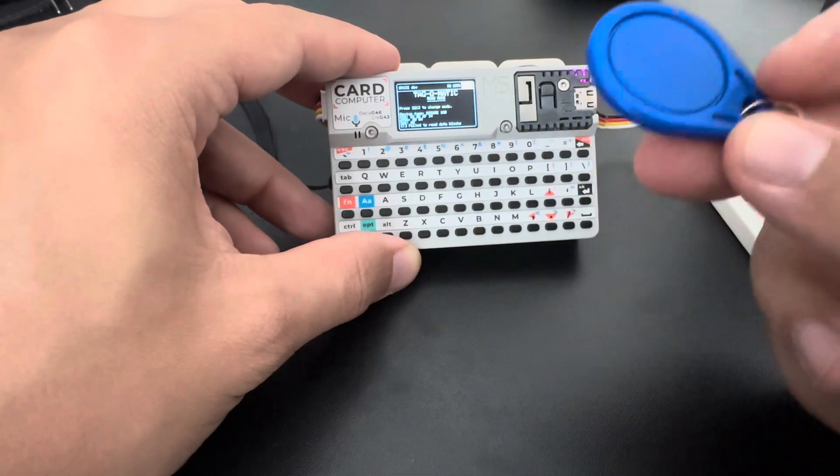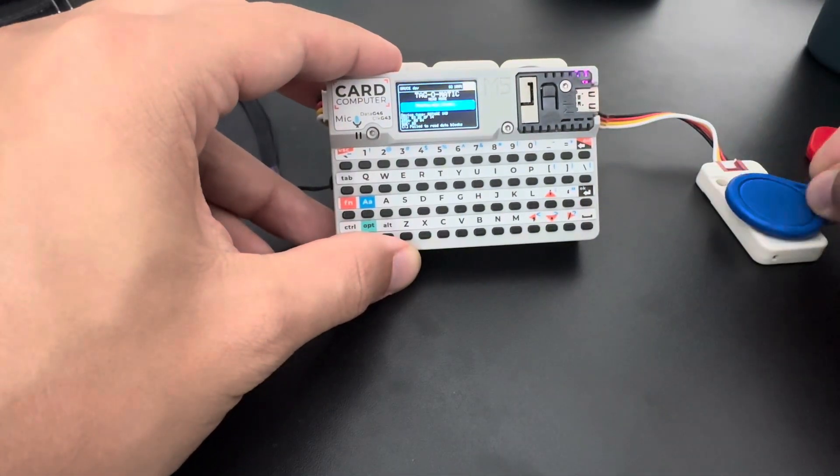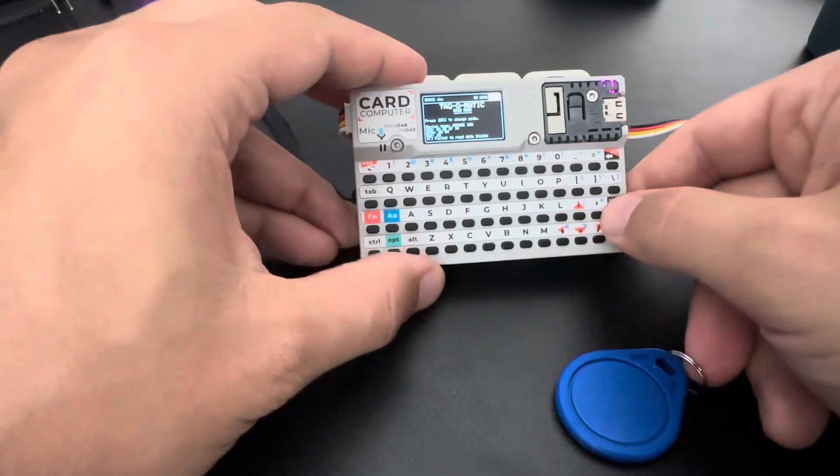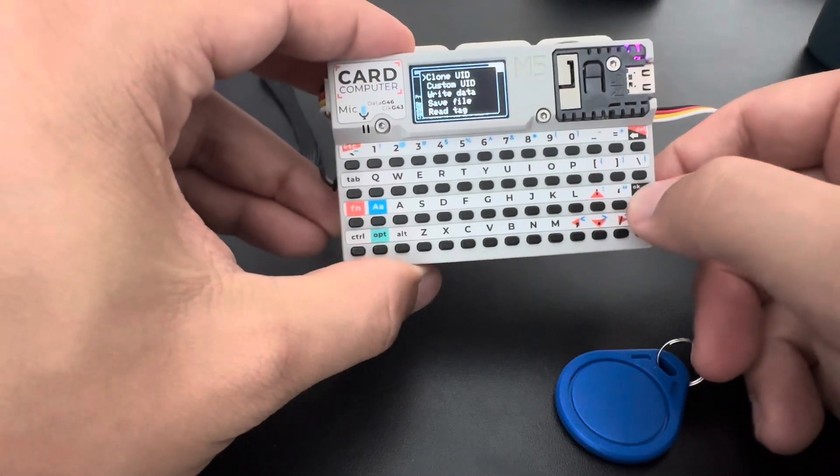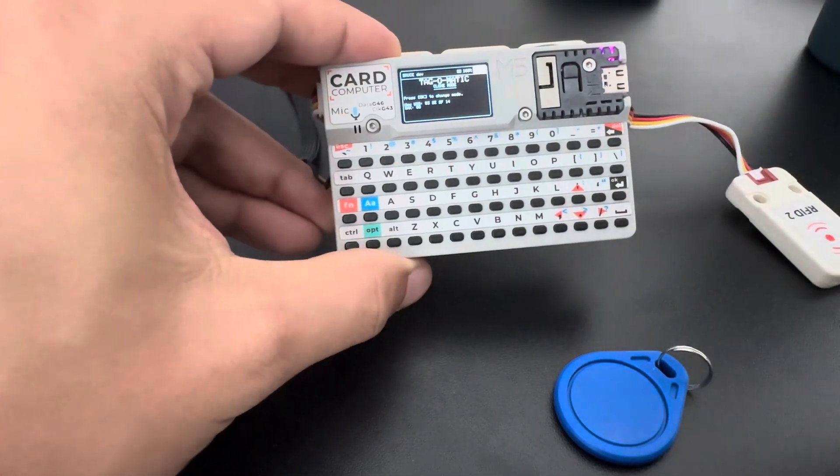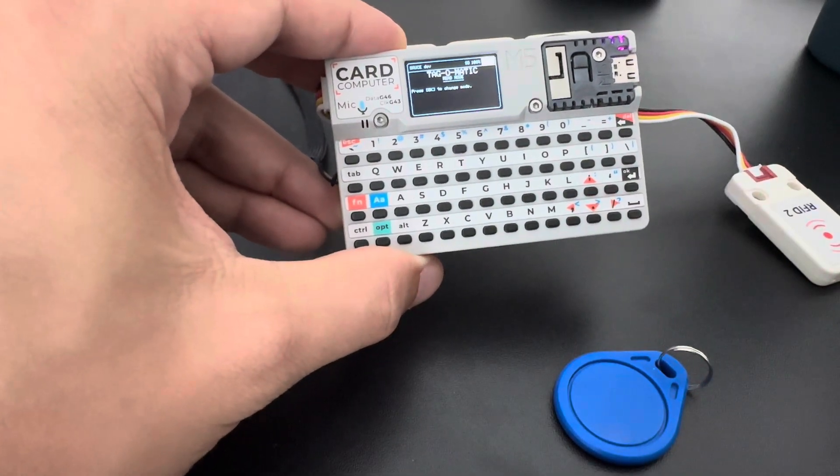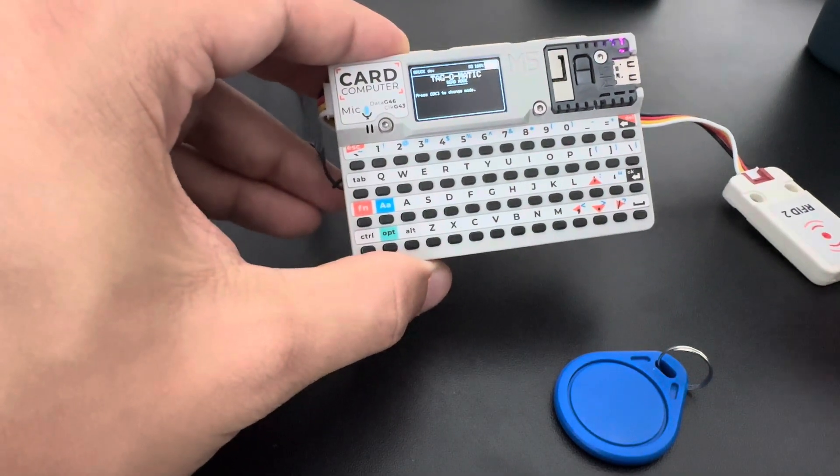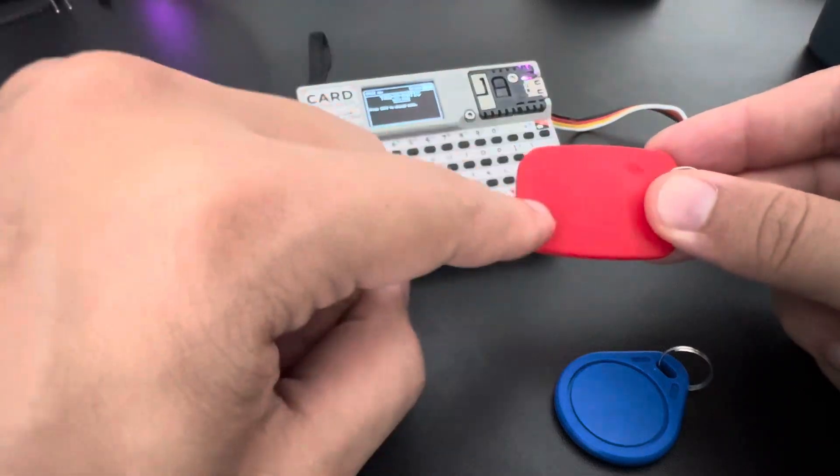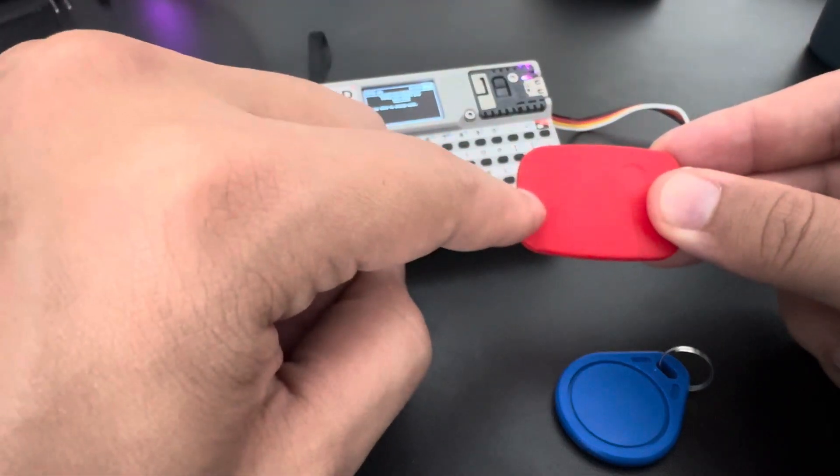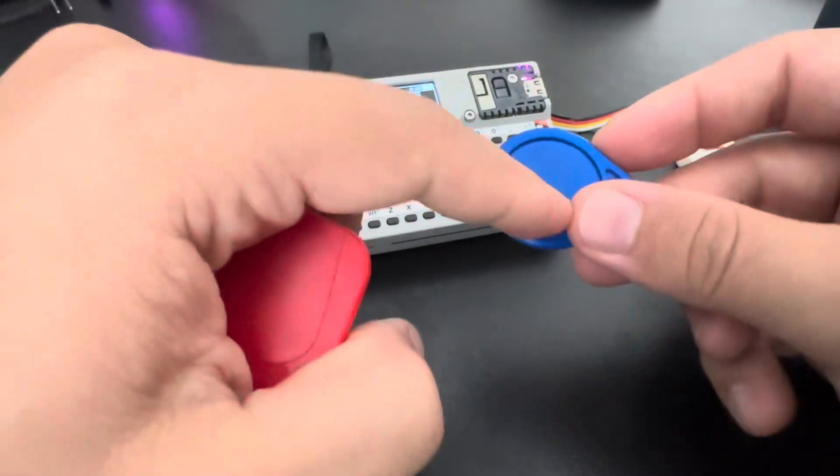So to show that, I'm going to read this one, do the same thing, clone UID. And now I'm going to clone the blue one to the red one. So if I put it here, UID written successfully.